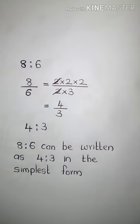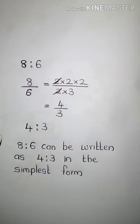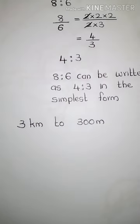So 8 is to 6 can be written as 4 is to 3 in its simplest form. To summarize: the first rule of ratio is that the order of numbers in a ratio is very important. The second rule is that the ratio should always be written in its simplest form. The third rule is that when comparing two quantities using ratio, they should have the same unit.